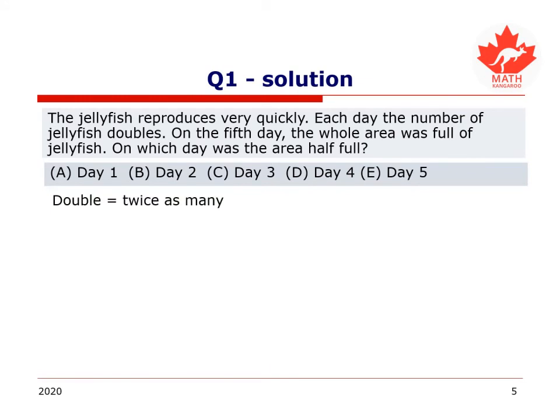So what do we know? First of all, doubles might be an unfamiliar word to some of us. It just means that there will be twice as many jellyfish. So for example, if I start off with one jellyfish and it doubles on the next day, the following day, I will have two jellyfish. So if this is new information for you, you can still pause the video, solve along and then come back.